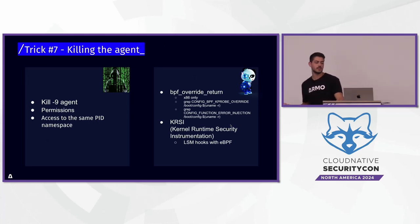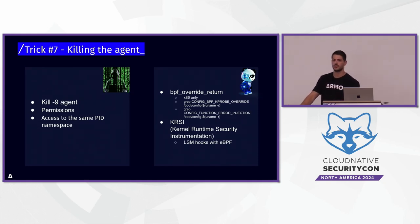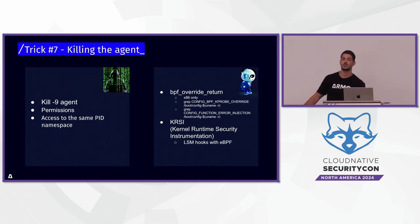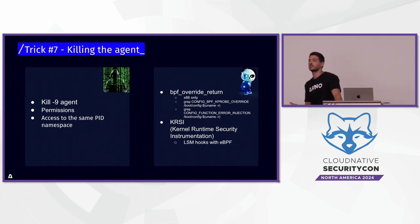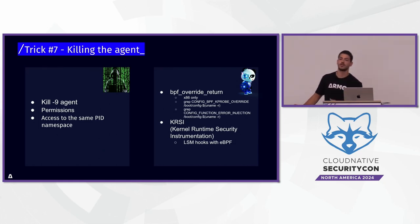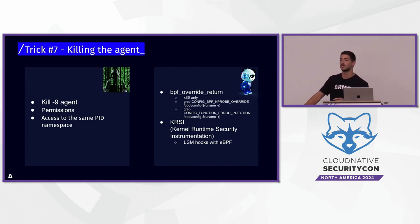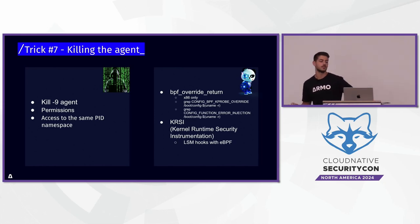The next trick is really easy: just kill the agent. At the end of the day, it's just a process. If you're in the same PID namespace and have permissions, you can just kill that process. In eBPF, there are two ways runtime detection tools can protect themselves. The first is bpf_override_return, a function that allows you to override the return address of the function you're hooking — but it only applies to x86, not ARM, and it's not always enabled. You can check with grep if it's enabled.